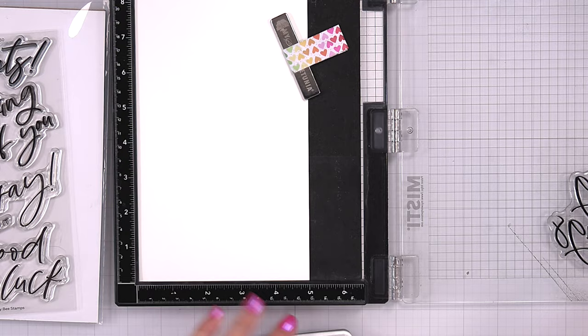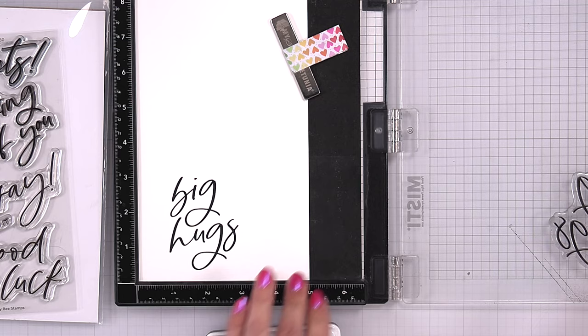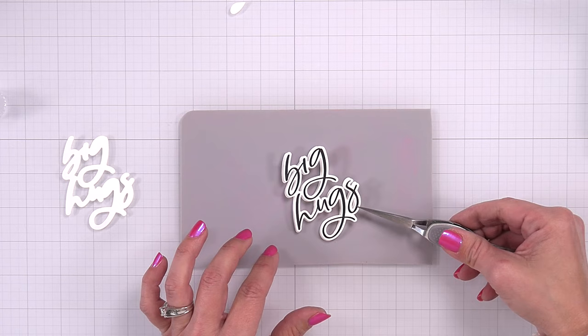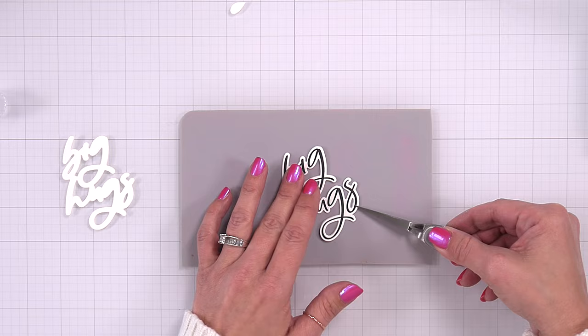So here I'm going to stamp out my sentiment. I'm using Big Hugs, which is one of my favorites off of this Thinking of You Big Time stamp set. I stamped it twice in the intense black ink, and then I'm going to die cut it out with the coordinating die. I also die cut it out two more times from some white cardstock. I'm going to add some liquid glue and attach these together, so that's going to help build up that dimension for my sentiment.